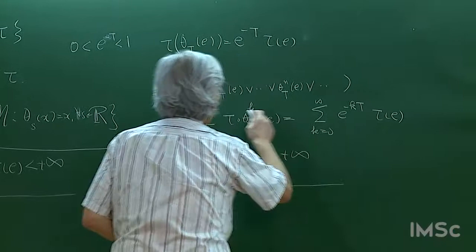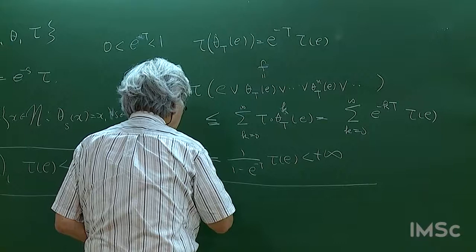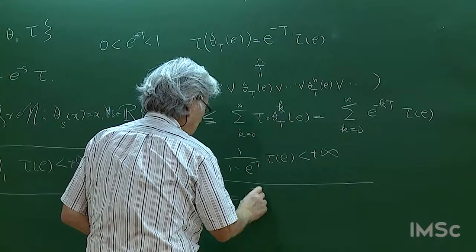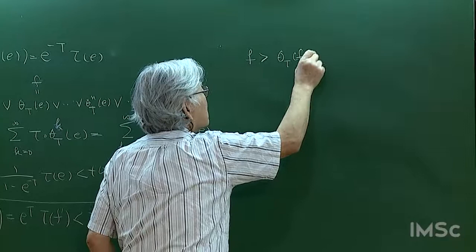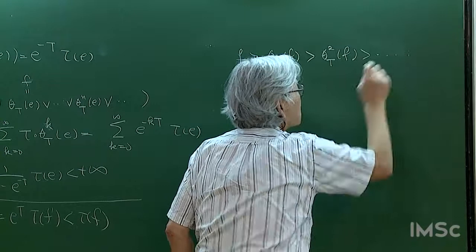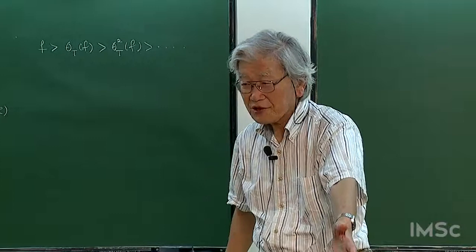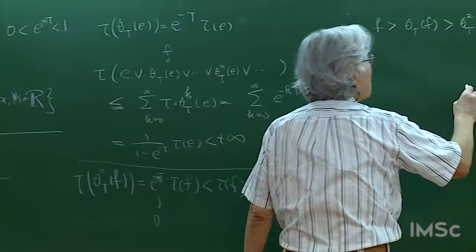We consider the set f. We have τ(θ_t(f)) = e^{-t}·τ(f), which is strictly less than τ(f). So f, θ_t(f), θ_t²(f) is a decreasing sequence of projections. If you apply θ_t n times, the trace goes down by e^{-nt}, which goes to 0. So this sequence goes down to 0.